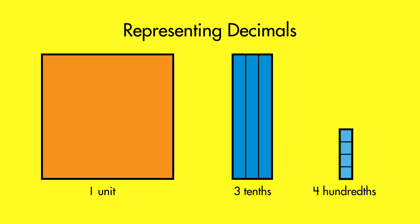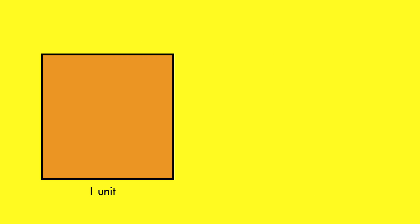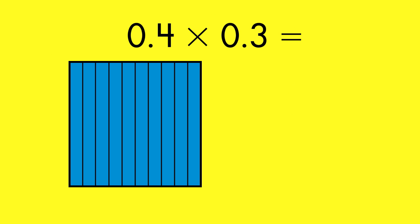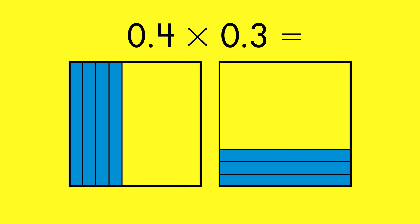Creating models like this can help you understand how multiplying decimals works. Let's use these models to do a simple decimal multiplication problem, 4 tenths times 3 tenths. First, let's look at the models for 4 tenths and 3 tenths.